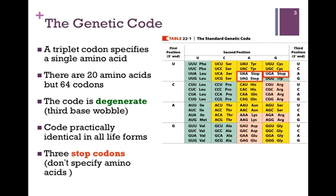The code is practically identical in all life forms, so the code would be the same in E. coli, or in zebra, or in humans. The code also contains three stop codons, outlined by the red boxes. These do not specify amino acids, and we'll see how they factor into the process of translation later.